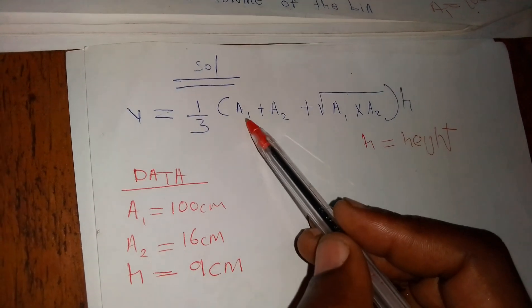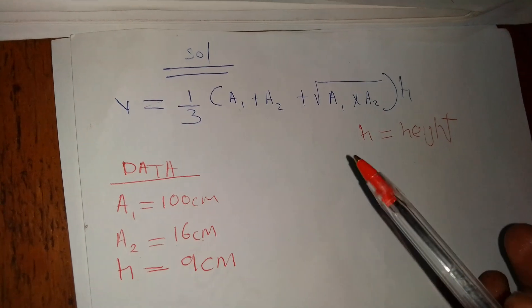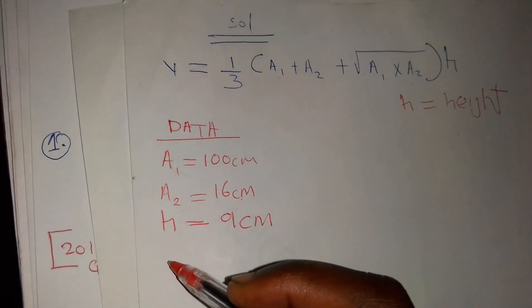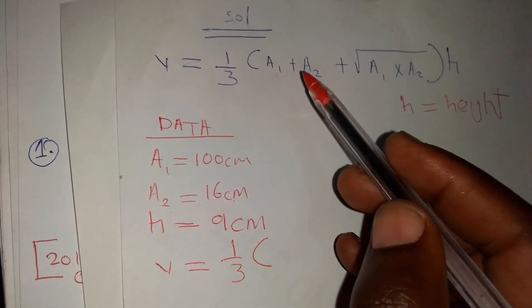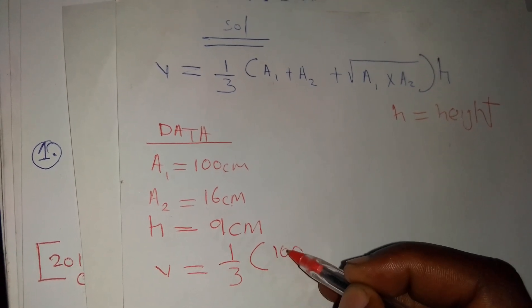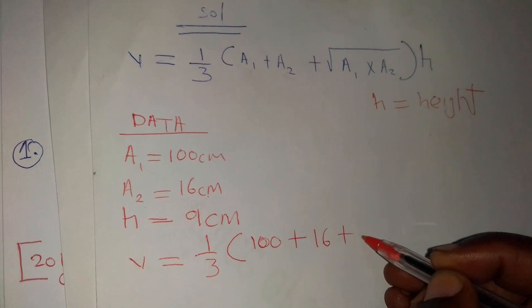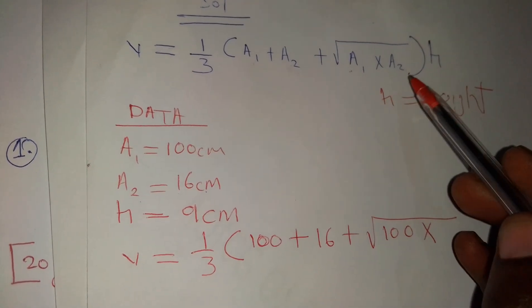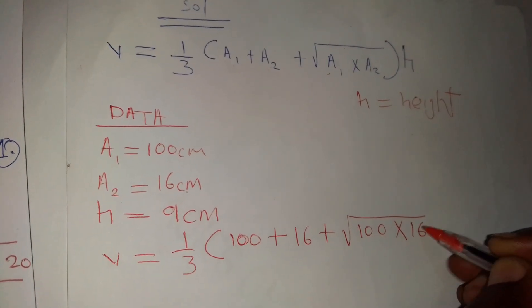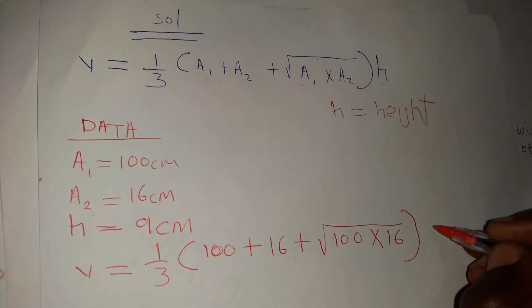Now it is complete: area 1, area 2, and height are all known. We substitute into the formula: Volume equals 1 over 3, open bracket, 100 plus 16 plus square root of (100 times 16), close bracket, times 9. Our height equals 9.